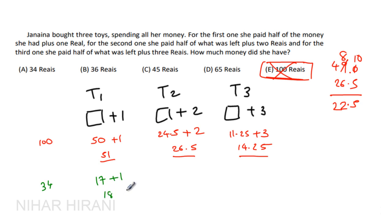Now on toy 2, half of leftover money. First, how much is leftover money? Out of 34, 18 spent means 16 is leftover. So half of 16 is 8, 8 plus 2 that is 10.